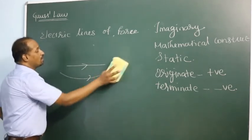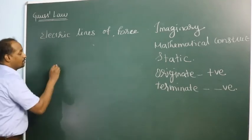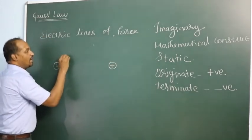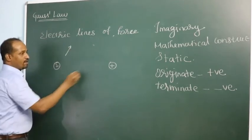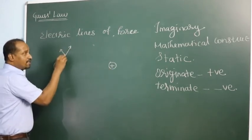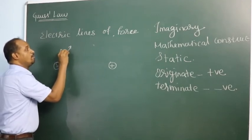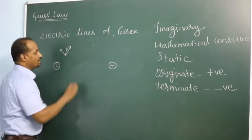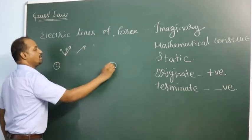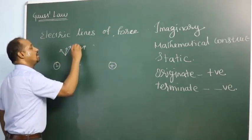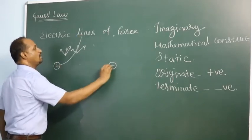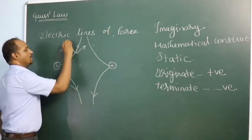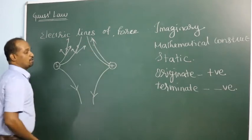What if both charges are like charges — both positive or both negative? At a point between them, the fields from each charge partially cancel. Exactly at the midpoint, they cancel out completely and there are no lines of force there. The lines of force go outward from each charge and bow away from each other.